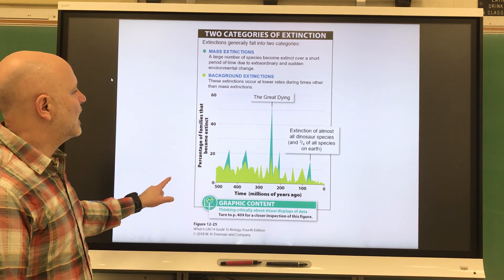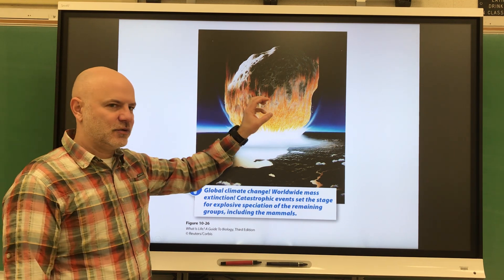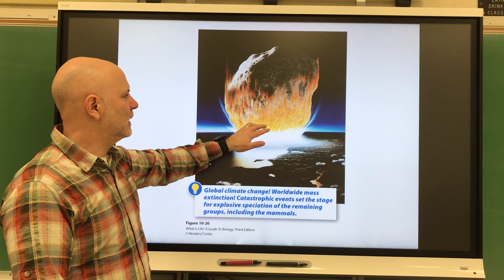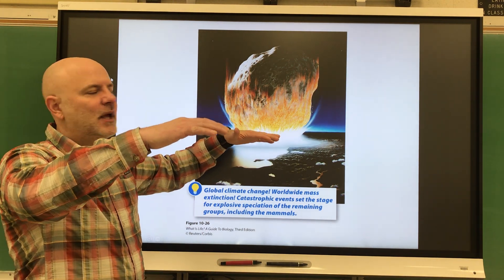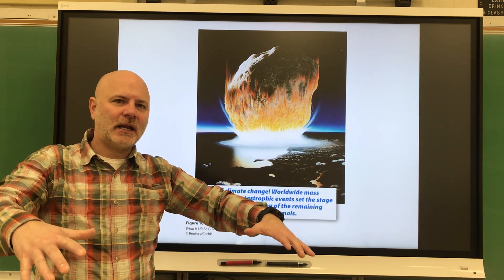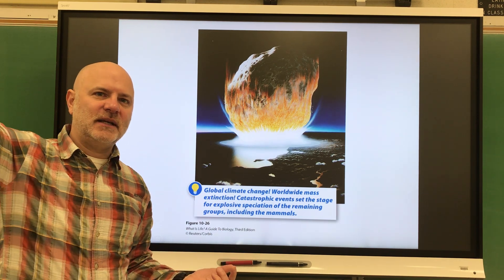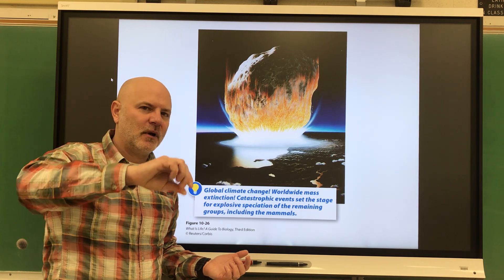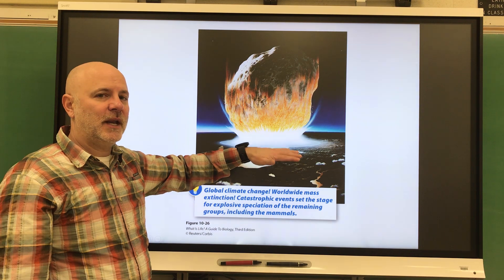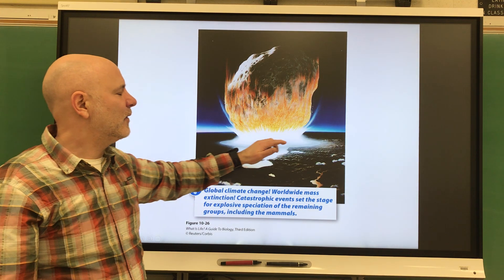We know that a large asteroid hit the earth about 65 million years ago, off the Yucatan Peninsula in Mexico. When it hit the earth, it produced a lot of particulates into the atmosphere. If you've ever seen a meteor — a meteorite once it's hitting our atmosphere — it burns up. After this major explosion occurred, all these small particulates were sent into the atmosphere.